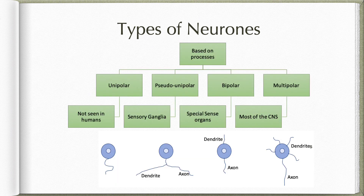Neurons can also be classified based on processes as unipolar, having a single process — these cells are not seen in human beings. Pseudo-unipolar neurons have a single process that immediately divides into two branches, one acting as a dendrite and the other as an axon, although structurally both resemble the structure of an axon. Such neurons are found in sensory ganglia.